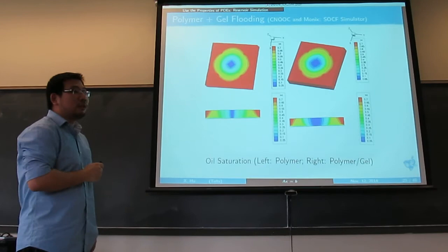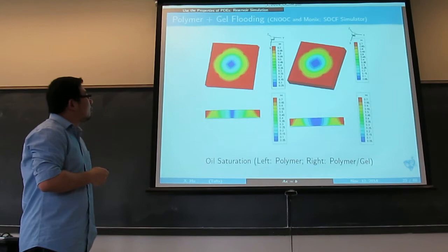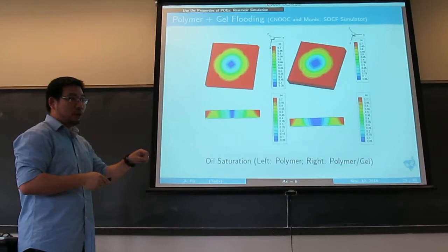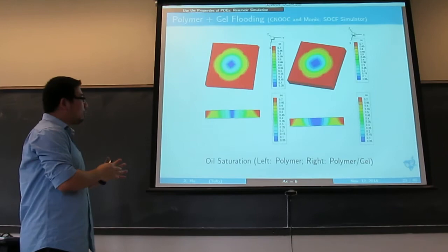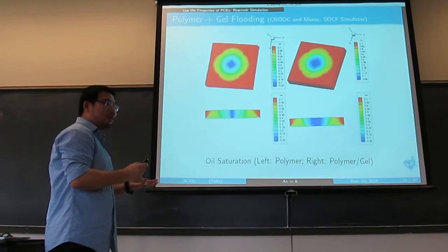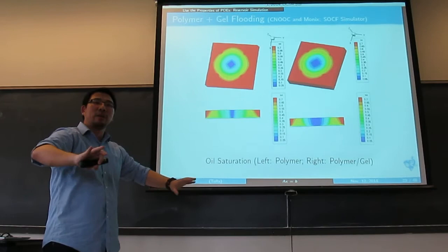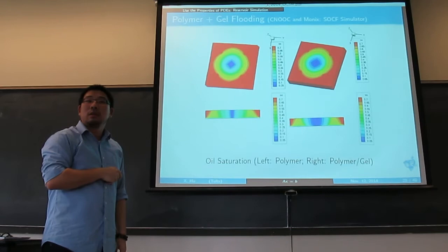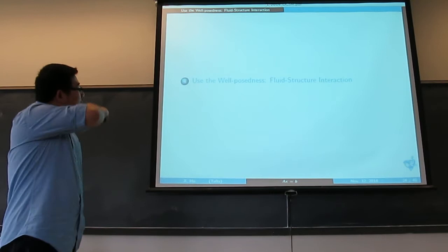Here is the result of polymer gel flooding. We have an injection well in the middle of the domain. If we only put polymer in the water, the blue zone — where oil has been recovered — is not very large. But if we put polymer gel, you get a much larger blue zone, meaning the oil has been pushed toward the production wells at the four corners. You can see the effect of adding polymer gels to enhance oil recovery.